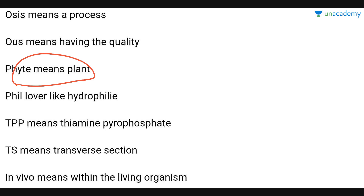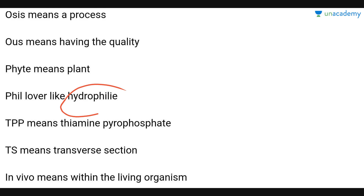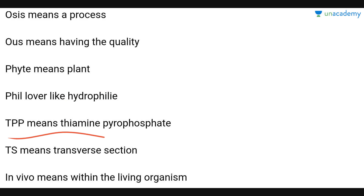'Phyto-' means plant. '-phil' means lover, like hydrophil — you will come across several substances that are hydrophilic and some that are hydrophobic. '-phobic' means having fear or danger of something, while '-phil' means lover. So hydrophil means water-loving. TPP means thymine pyrophosphate.